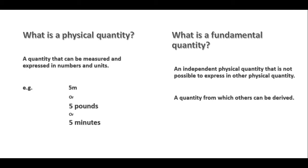Next, we're going on to what is a physical quantity. A physical quantity is a quantity that can be measured and expressed in numbers and units. We have some examples here for how it can be expressed: 5 meters, 5 pounds, 5 minutes. Five is the number or the magnitude or the size, and meter, pounds, and minutes are the different units.